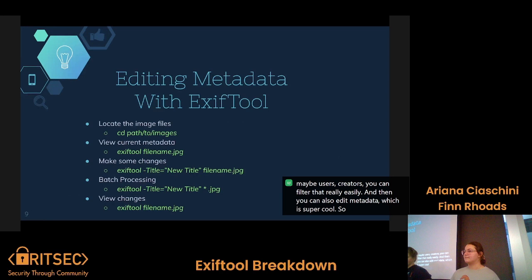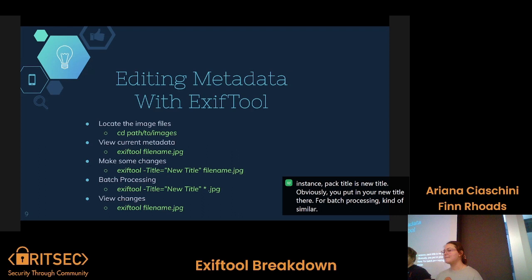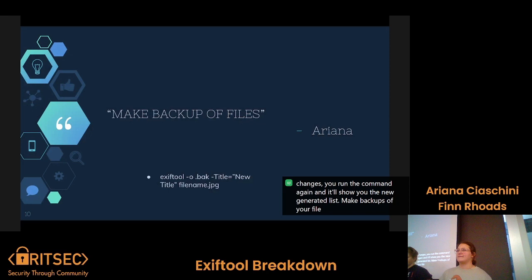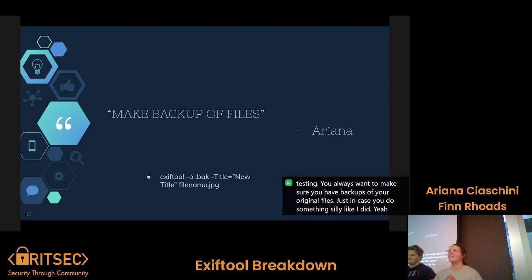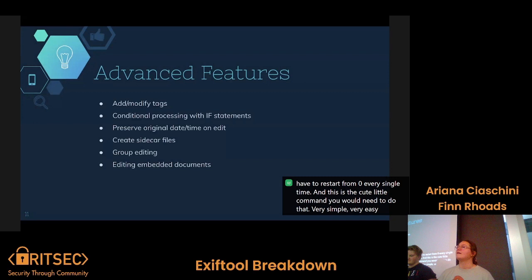You can also edit metadata, which is super cool. You have to locate the path to the file, look at the current metadata by running ExifTool, then make changes — for instance, -title is 'new title,' putting in your new title there. For batch processing, using a wildcard star does the same thing across multiple files. Then to view your new changes, you run the command again and it shows you the new generated list. Always make backups of your files — that's something I've learned the hard way in pen testing, just in case you delete everything or make unwanted changes.